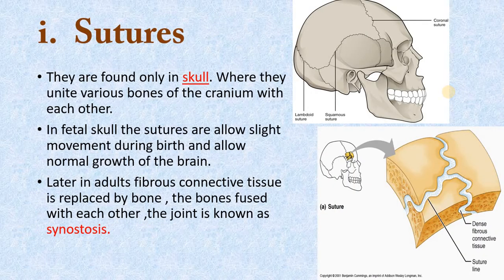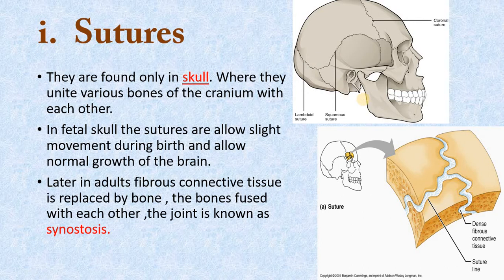Sutures are present in the skull. When we see two skull bones joined together, we call it a suture — for example, coronal suture, squamous suture, and lambdoid suture. These are found only in the cranial bones. In the fetus, sutures allow slight movement to aid during birth and allow normal brain growth. But as you grow up, the fibrous connective tissue is replaced by bone, and this fusion is called synostosis.